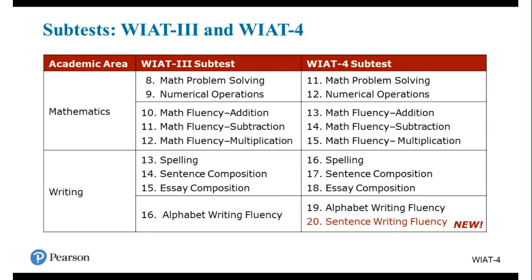For math, the subtests are the same: math problem solving, numerical operations, and math fluency. For writing, spelling, sentence composition, and essay composition are consistent from the WIAT-3 to the WIAT-4, though there are changes in terms of actual content. Alphabet writing fluency is also on WIAT-4, and we added a new fluency subtest, sentence writing fluency. When you think about the five subtests that are new, phonemic proficiency and orthographic choice plus three fluency subtests — and four of the five actually assess reading. We're trying to enhance the assessment of reading on WIAT-4.